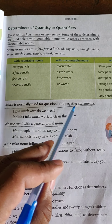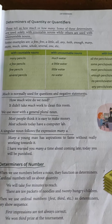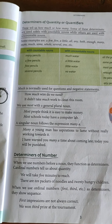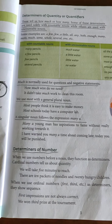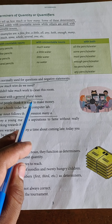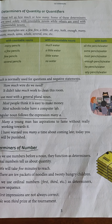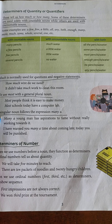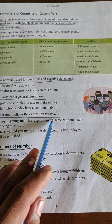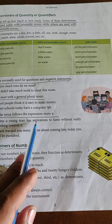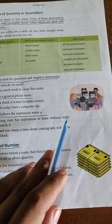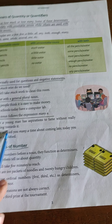'Much' is normally used for questions and negative statements. If you want to use 'much,' use it in a question or negative statement. Second, we use 'most' with a general plural noun. Another point: a singular noun follows the expression 'many a' — for example, 'Many a young man has aspirations to fame without really working towards it.'